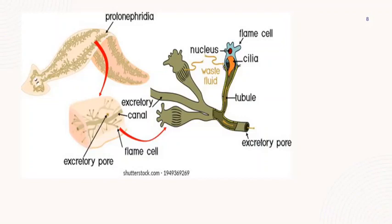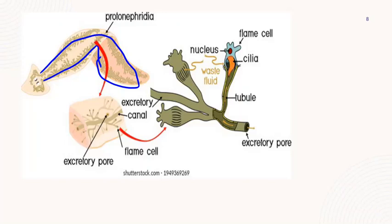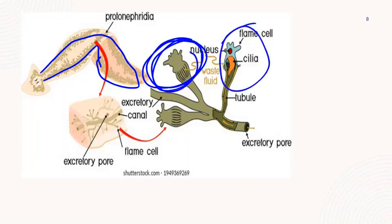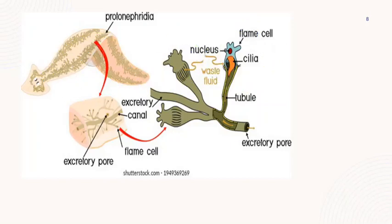The excretory system is composed of two canals running along the entire length of the body. These excretory canals do not have external or internal openings — they have blunt ends forming the flame cells. The flame cells drain material into the excretory pore.